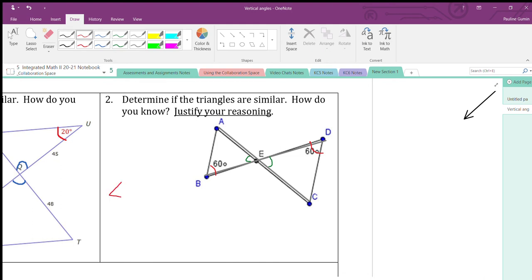The measure of angle B is congruent to the measure of angle D. And the measure of angle BEA is congruent to the measure of DEC. So, we have another angle-angle similarity.